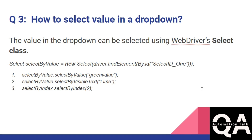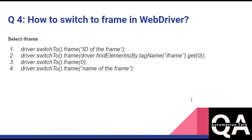The third question is: how to select a value in a dropdown? In Selenium we have the Select class. You can see here that we create an object of the Select class, passing the web element as an argument. Then we have different methods: selectByValue(), selectByVisibleText(), and selectByIndex(). These are the different methods you can use to select a value in the dropdown.